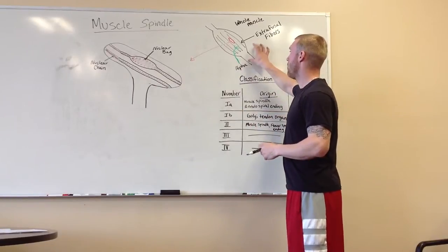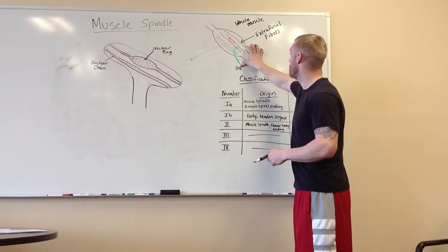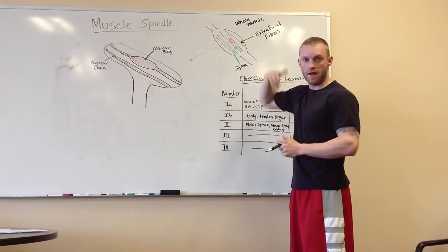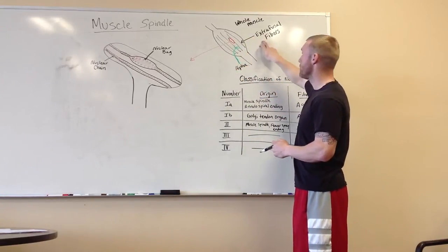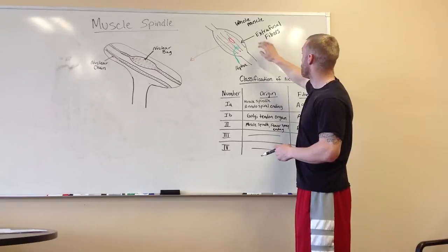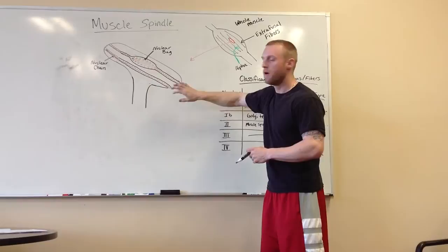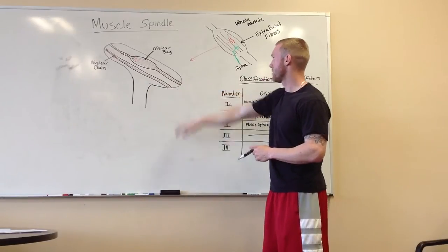So first we have the whole muscle right here. The whole muscle and these black things are the fibers on the outside of the muscle, which are extrafusal fibers. So don't get that mixed up. Extrafusal fibers on the whole muscle, intrafusal fibers in the muscle spindle.